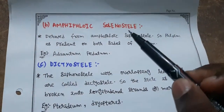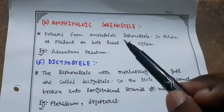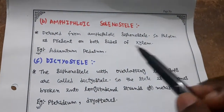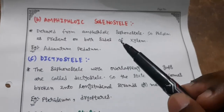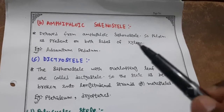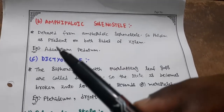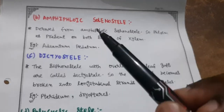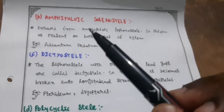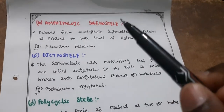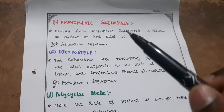Amphiphloic solenostele is derived from amphiphloic siphonostele, so phloem is present on both sides of xylem, and leaf gaps are also present. Example: Adiantum pedatum.